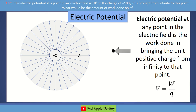The formula is V equals W by Q. The definition of electric potential at any point in an electric field is the work done in bringing the unit positive charge from infinity to that point, where V equals W over Q.